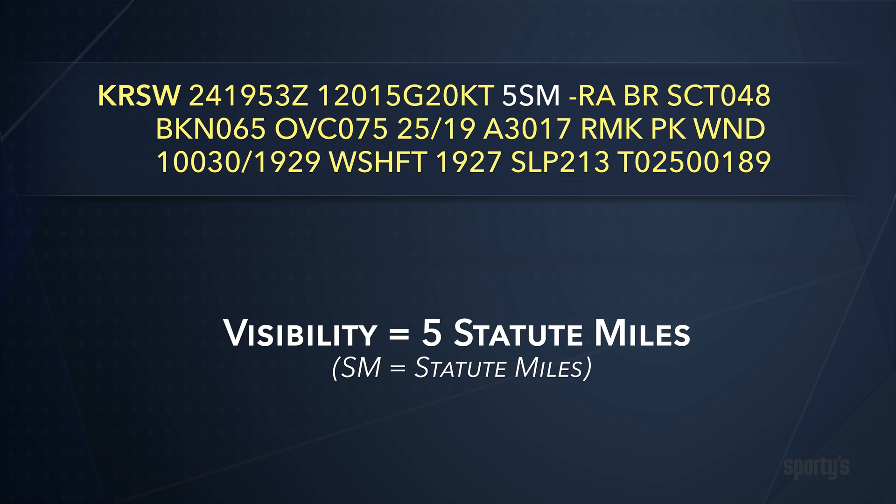Visibility follows wind — 5 statute miles in this case. Surface visibility in the U.S. will always be in statute miles, abbreviated SM.